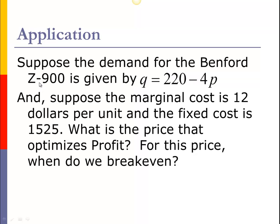In the previous video, I did the revenue formula. This was our demand that we were given. Now we have some more information: marginal cost is $12 per unit, fixed cost is $1525. And now we have two different questions: what price optimizes profit, and what price gives us break even?